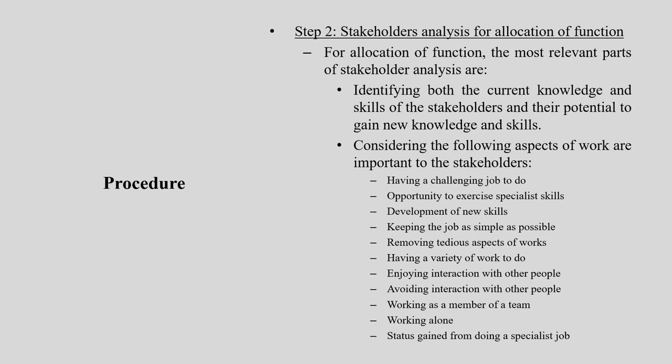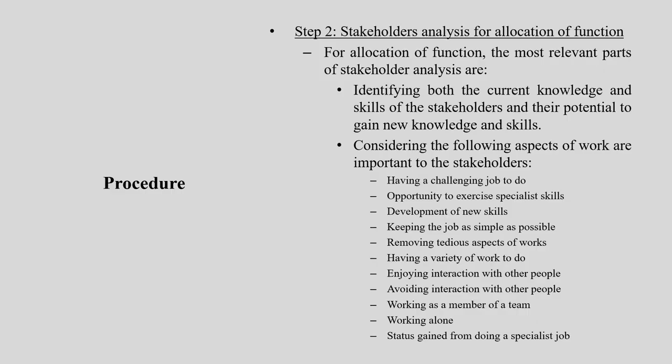For allocation of function, the most relevant part of stakeholders analysis is identifying both the current knowledge and skill of the stakeholders and their potential to gain new knowledge and skill. You compare whatever knowledge and skill they currently have with the potential available to gather new knowledge or skill. This can be done through interviews or questionnaire studies.